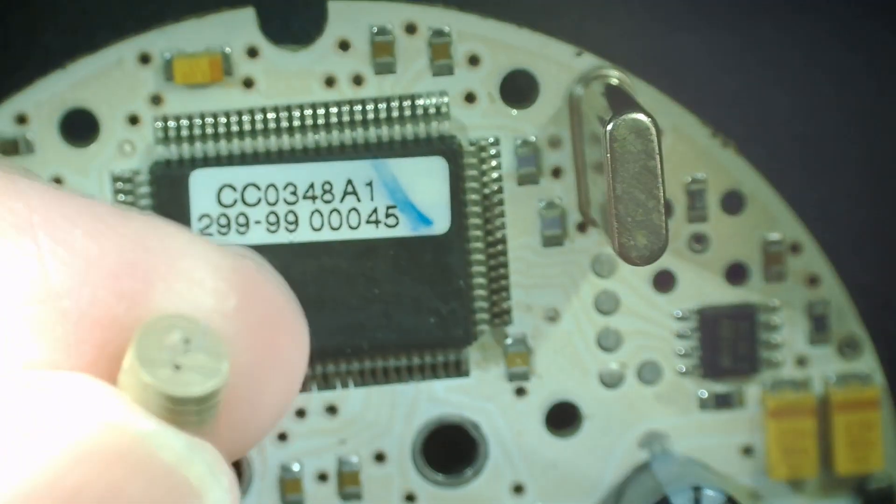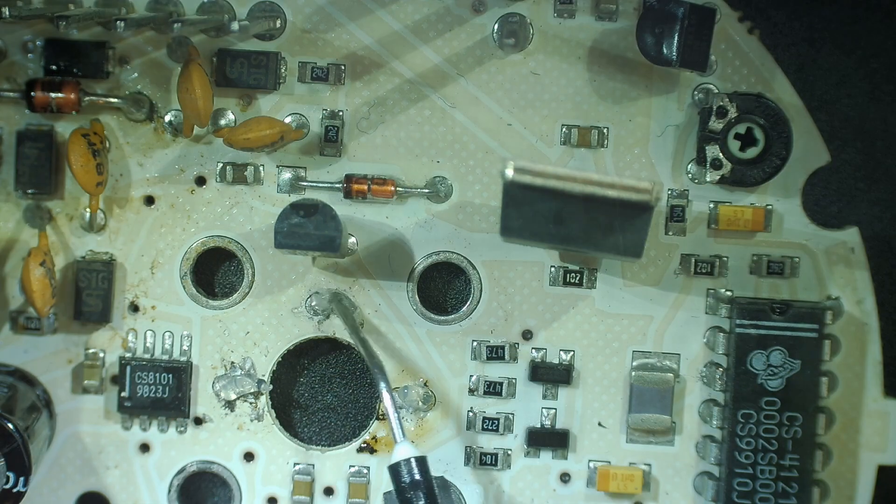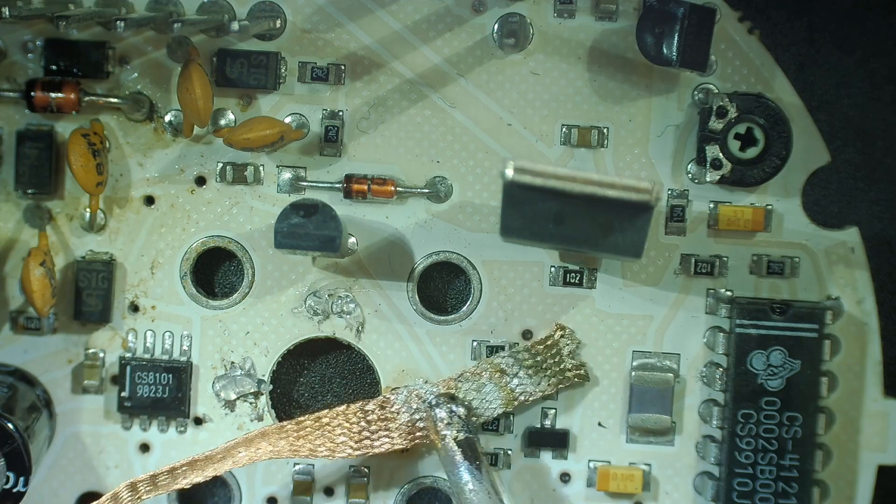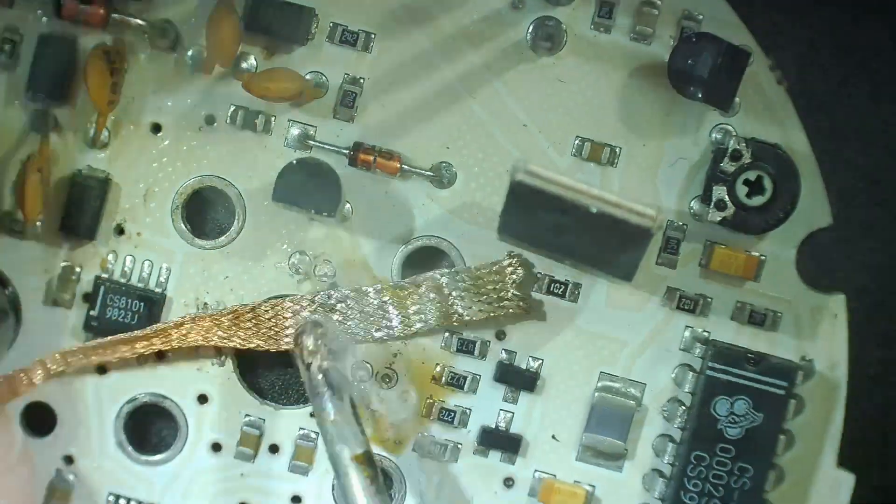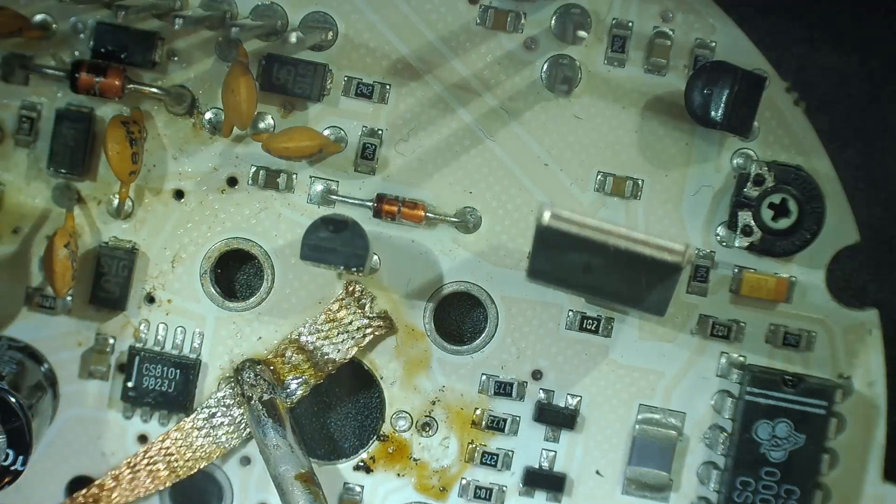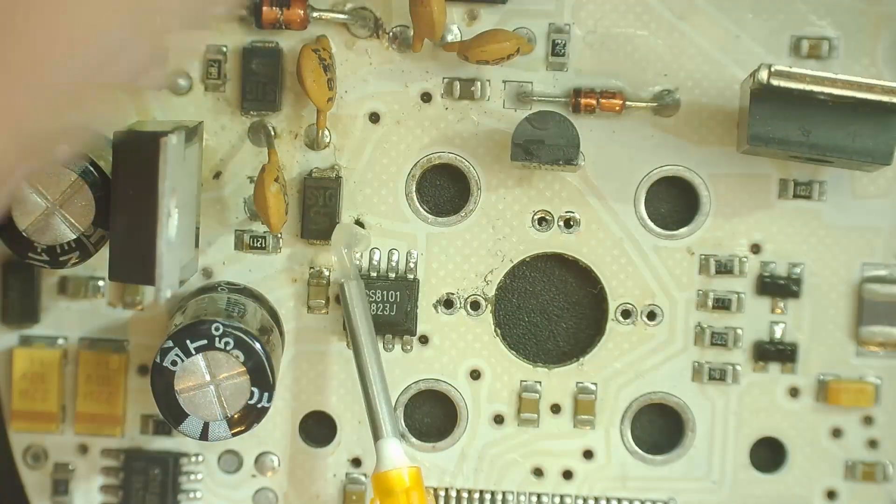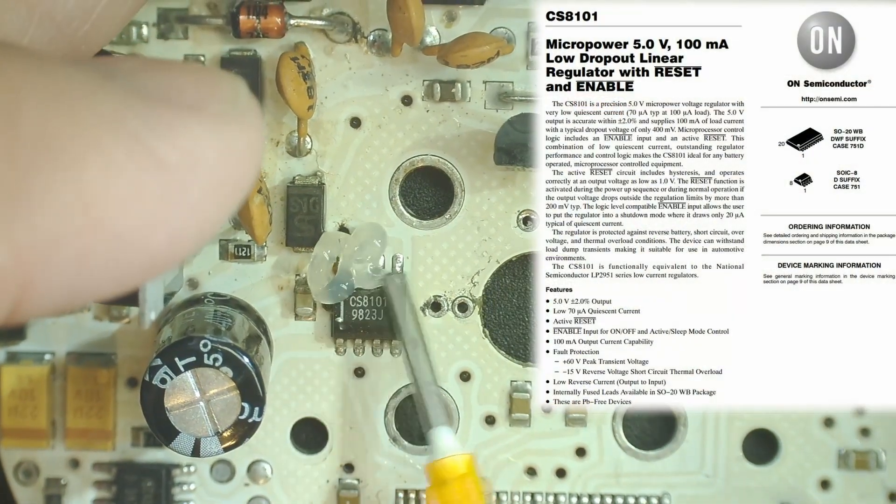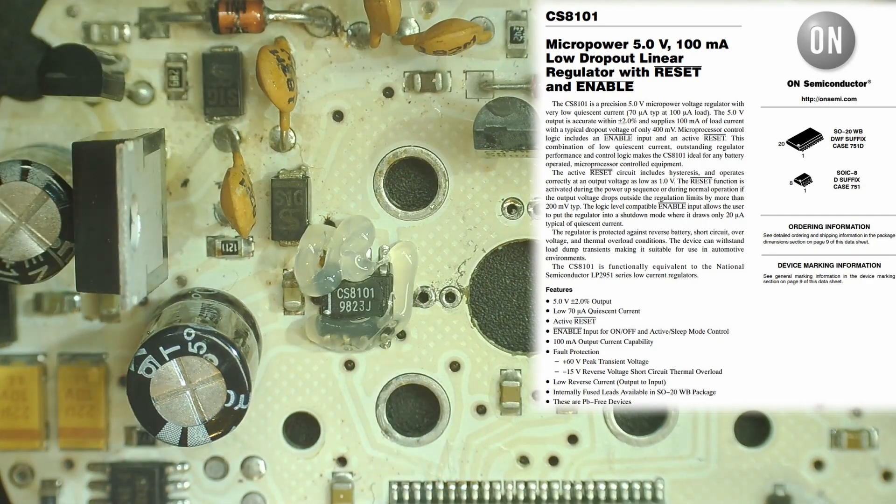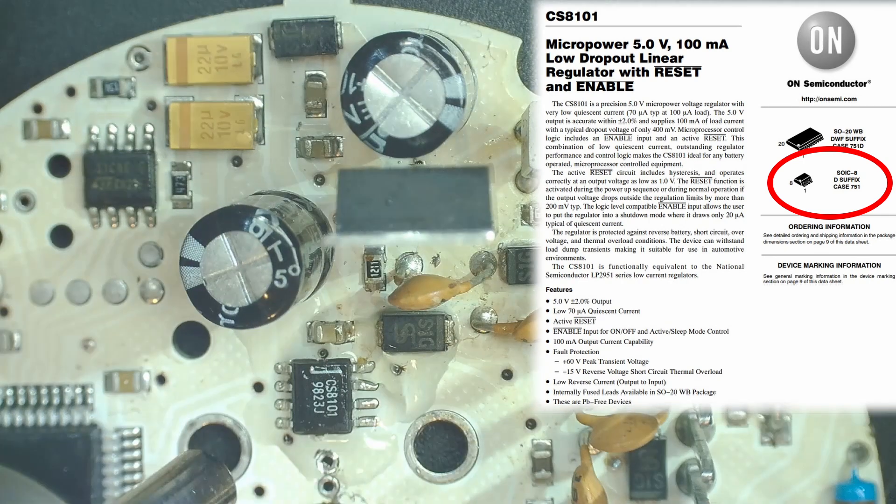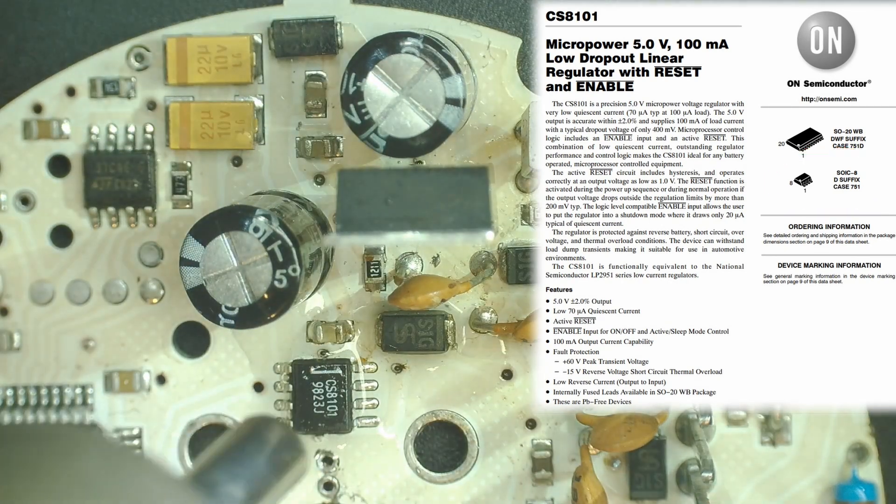There we go, there's our bad bulbs. I'll keep looking for these. If I don't find anything, I'll put some LEDs in with a series resistor. We're going to clean these through holes up. I'm also going to remove this CS8101 chip - this is a 5-volt linear regulator, it's a SOI C8 or small outline IC 8-pin.